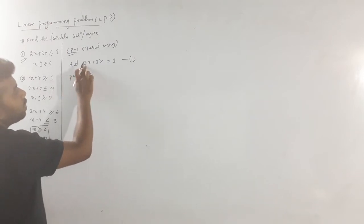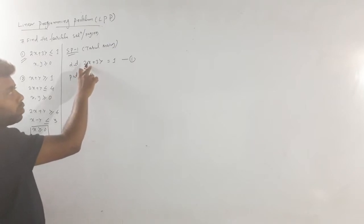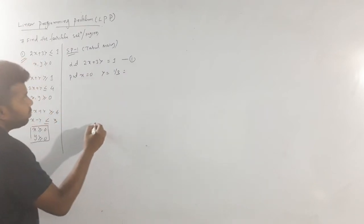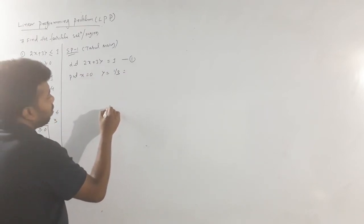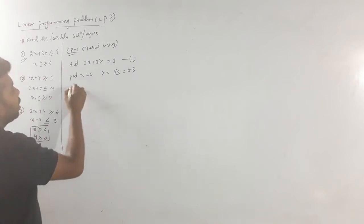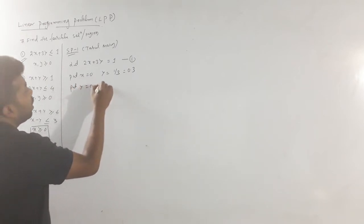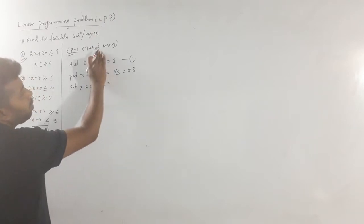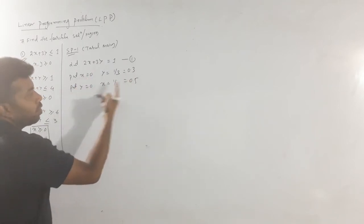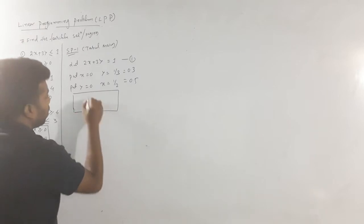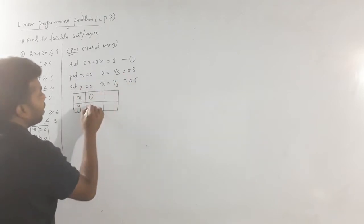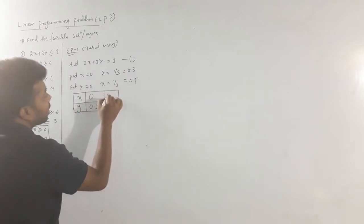Put x = 0: then 2×0 + 3y = 1, so y = 1/3 ≈ 0.3. So the point is (0, 0.3). Next, put y = 0: then 2x = 1, so x = 1/2 = 0.5. So the second point is (0.5, 0). These two points complete the table for equation 2x + 3y = 1.